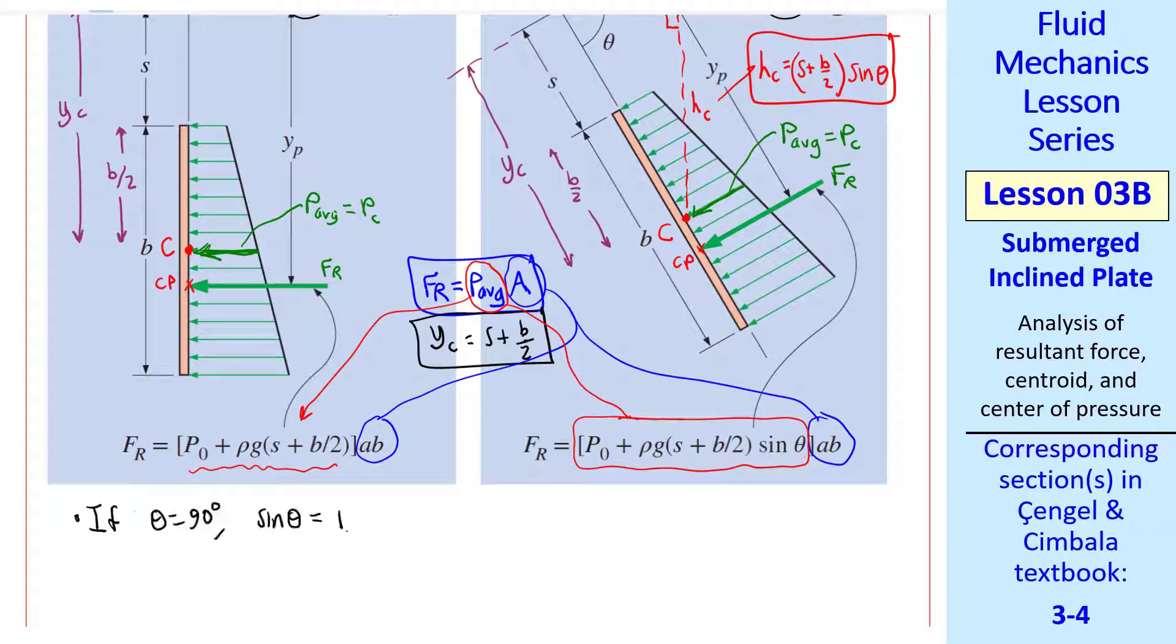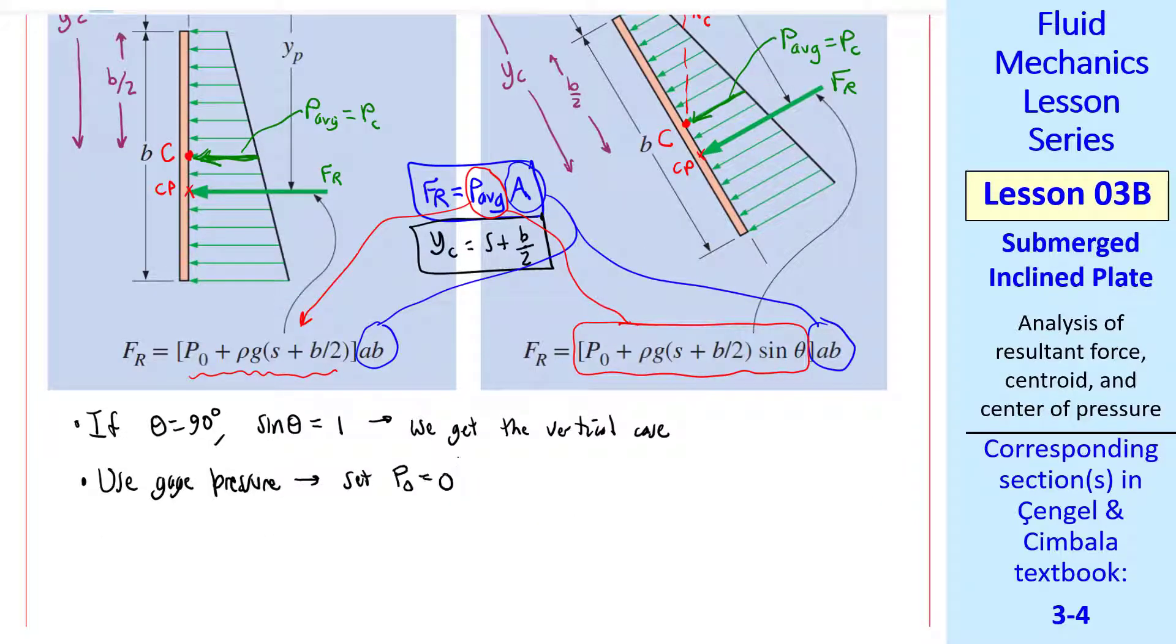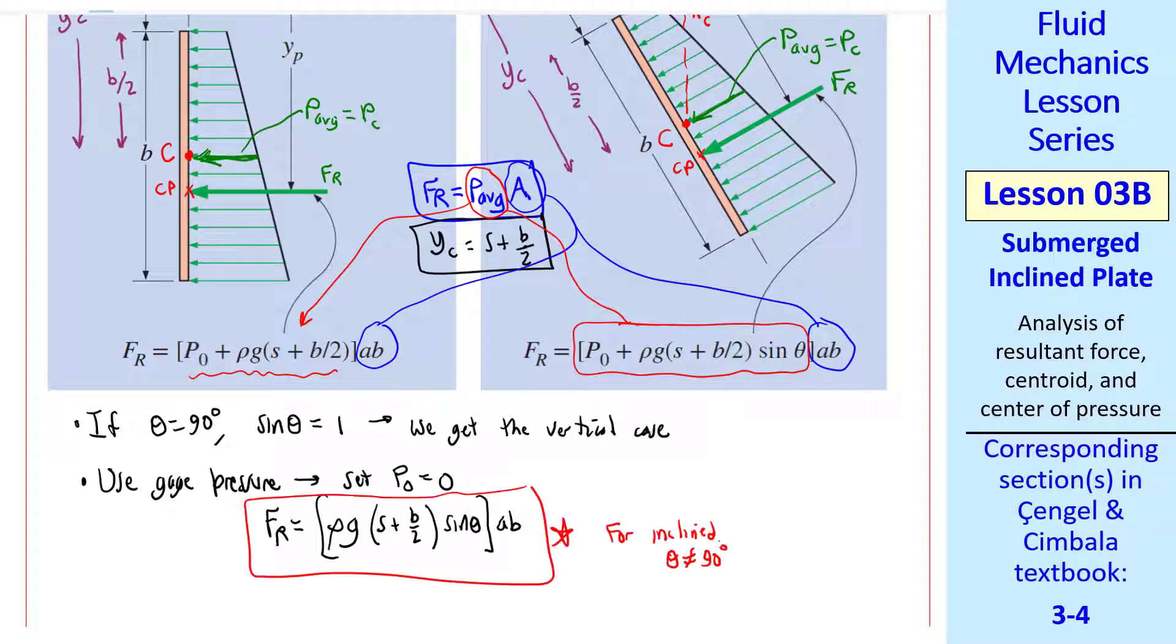Some comments: if theta is 90 degrees, sine theta is 1, we get the vertical case back. Let's use gauge pressure, where we set P naught to 0. Everything gets simpler. Resultant force is then rho g, S plus B over 2, sine theta, times the area AB. This is true for the inclined case where theta is not 90 degrees, or the vertical case where theta equals 90 degrees, since sine theta is 1 when theta is 90 degrees.